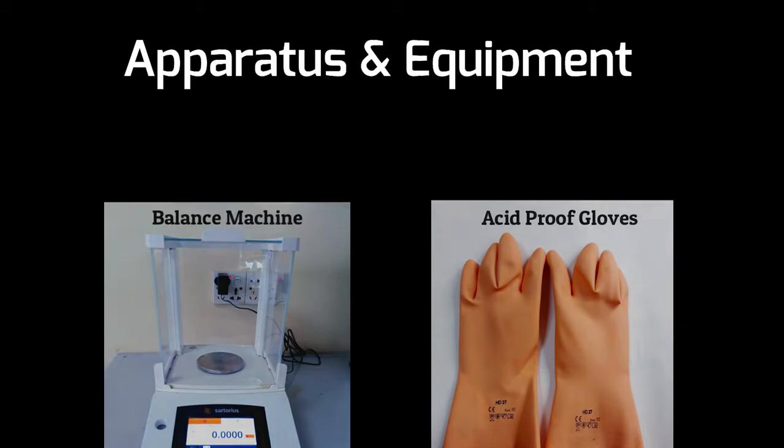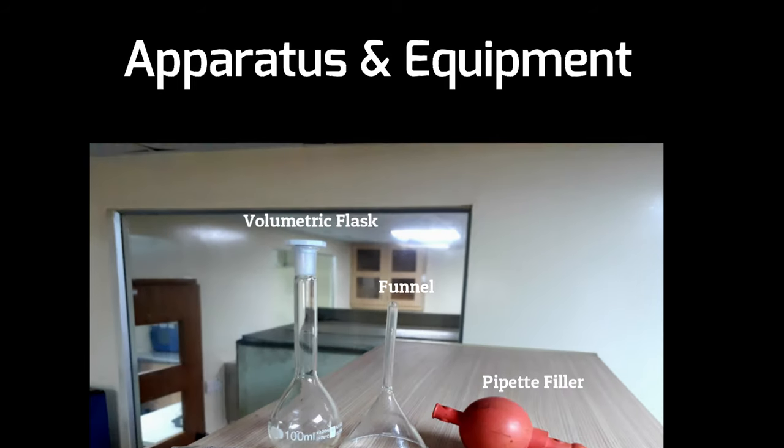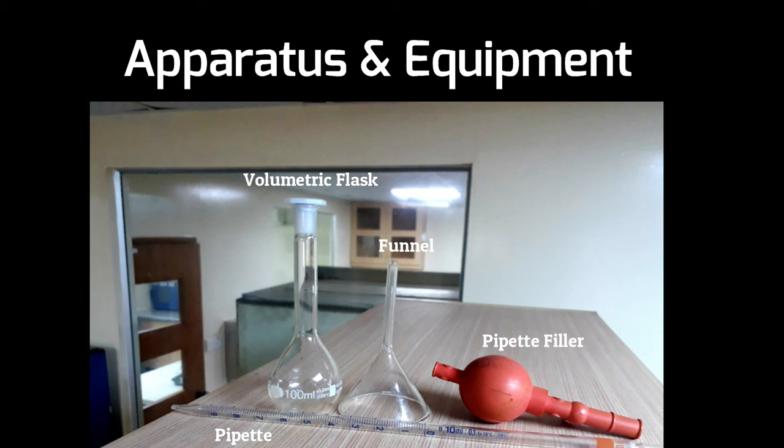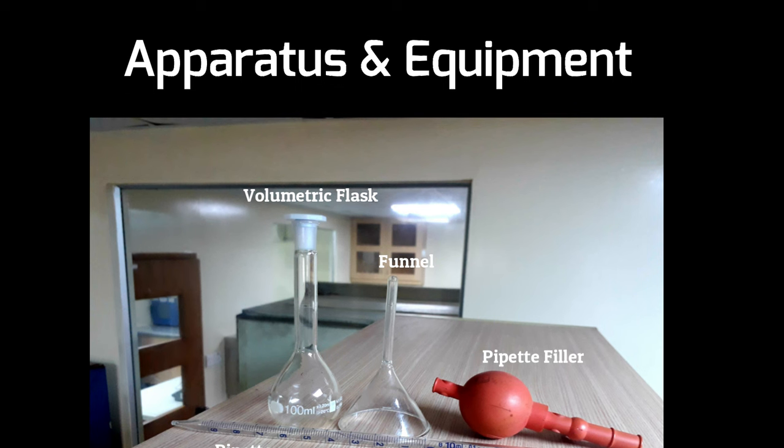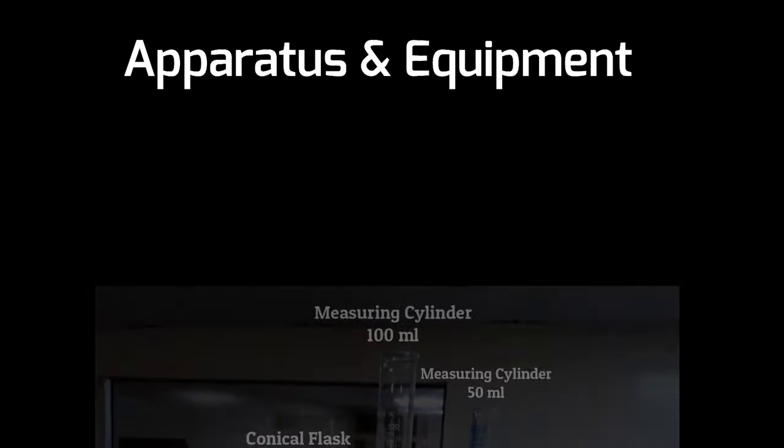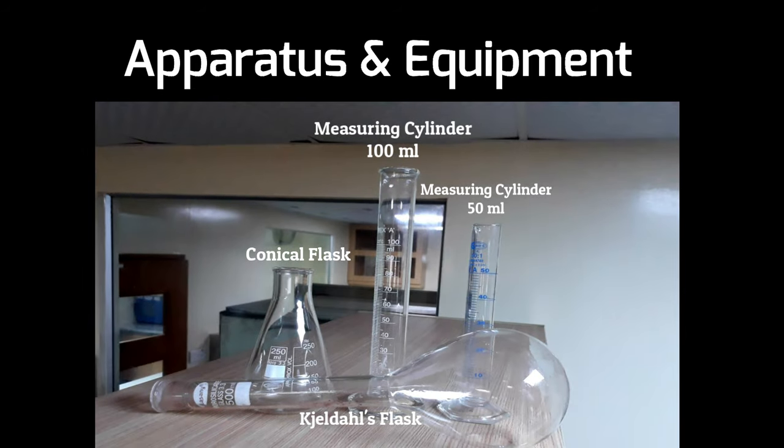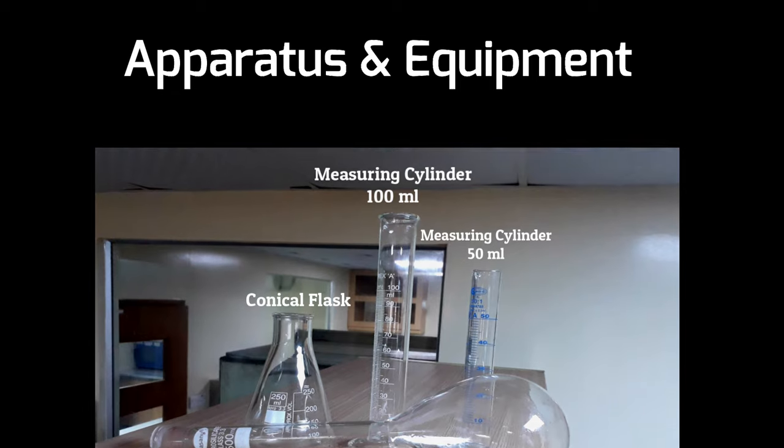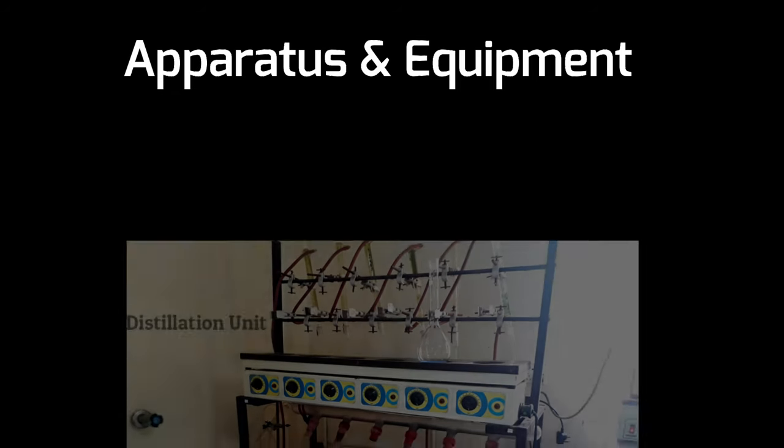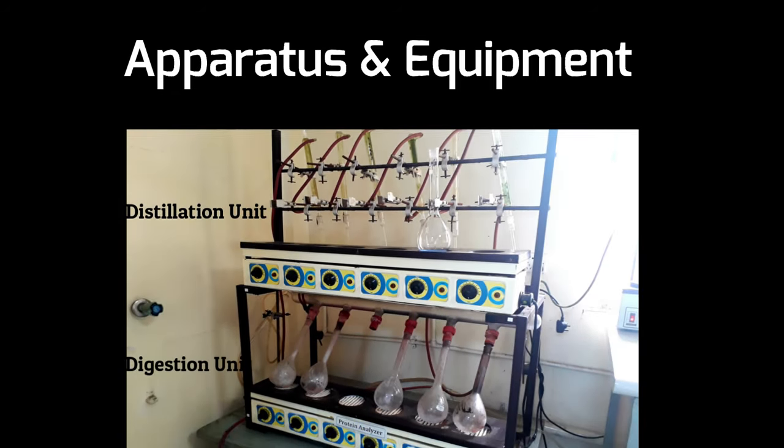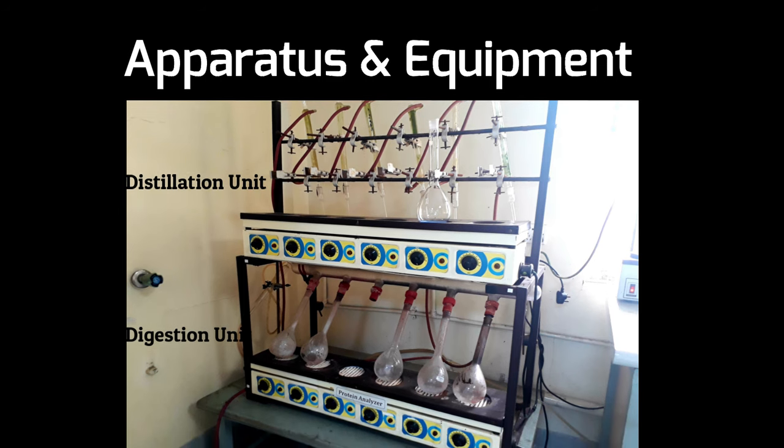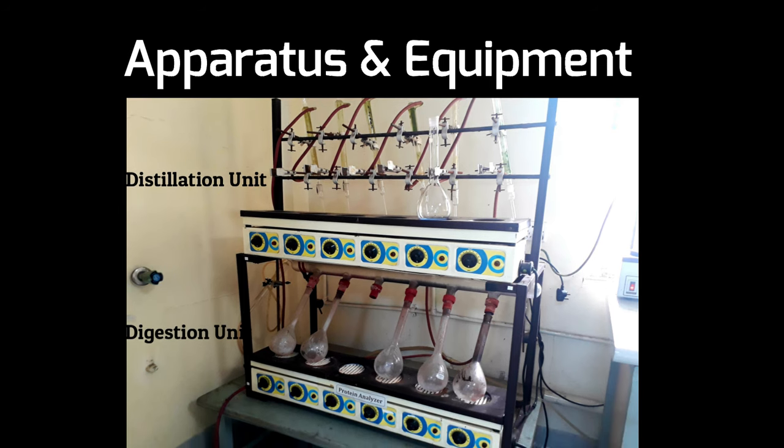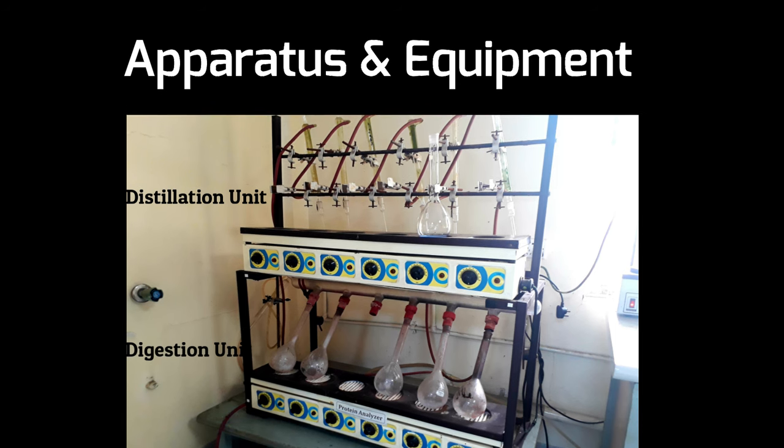Like balance machine, acid-proof gloves. Among the glassware we need 100ml volumetric flask, pipette, pipette filler funnel, measuring cylinders of 100ml and 50ml, Kjeldahl flask and conical flask. Finally we need a protein analyzer machine, it could be either manual or automated. In this video we will use a manual protein analyzer. For automated protein analyzer, each step should be followed sequentially.